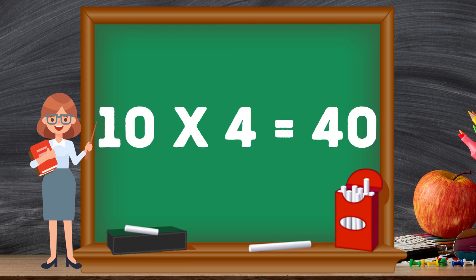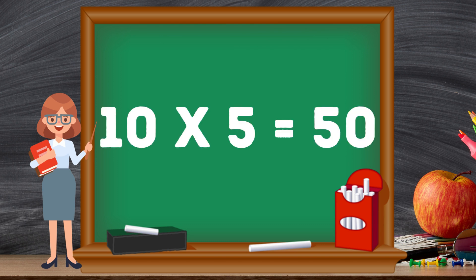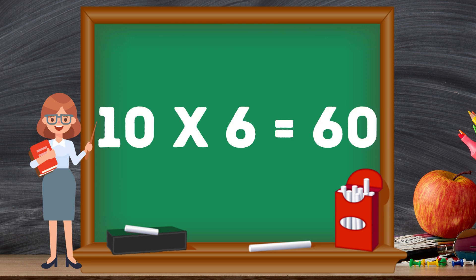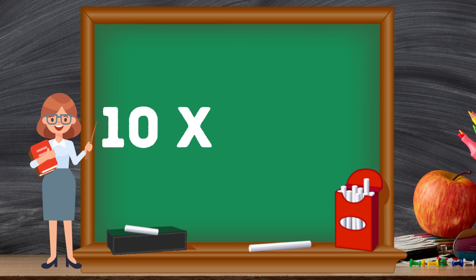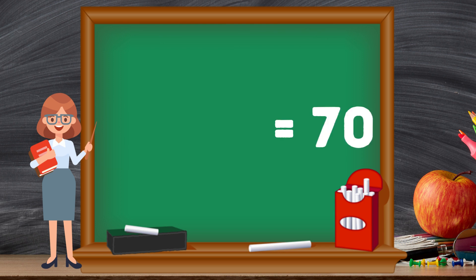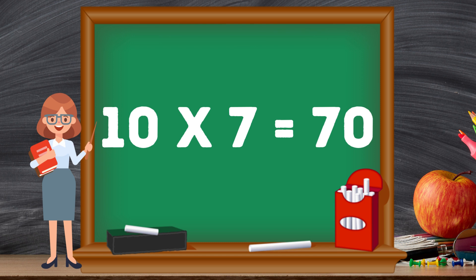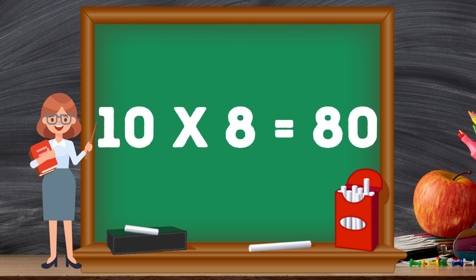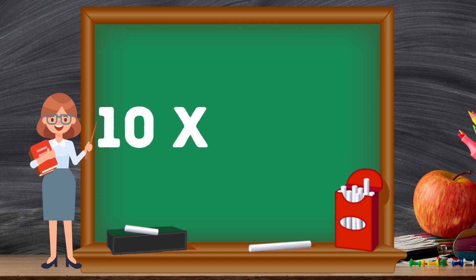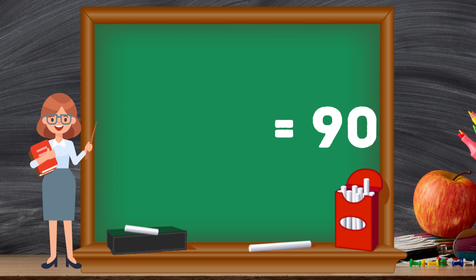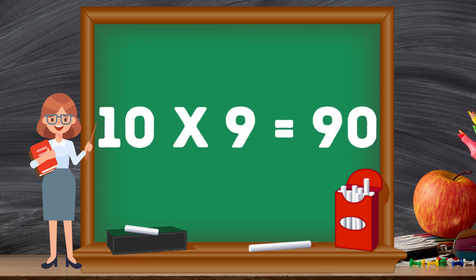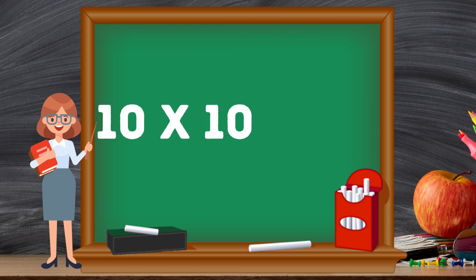Ten fives are fifty. Ten sixes are sixty. Ten sevens are seventy. Ten eights are eighty. Ten nines are ninety. Ten tens are hundred.